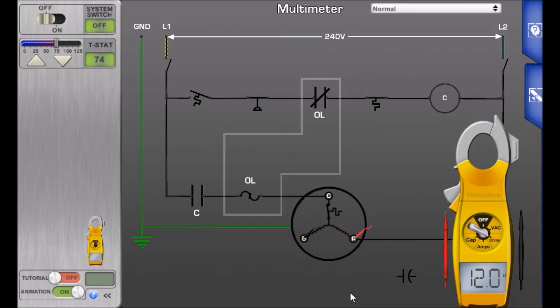Now the different compressors will have different resistance measurements but the total between common and start and common and run, if you total those up that's what you should be measuring between start and run windings. And if you measure anything over 20 ohms on any leg you probably have a bad compressor but this one happened to check out good. So the next one we'll look at is an open winding in the compressor.